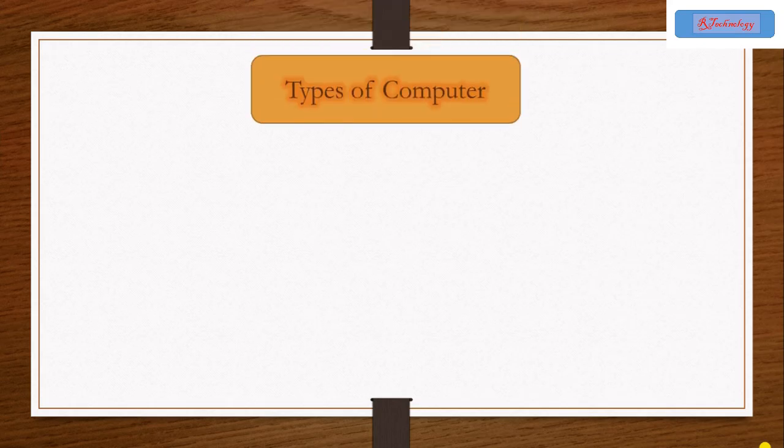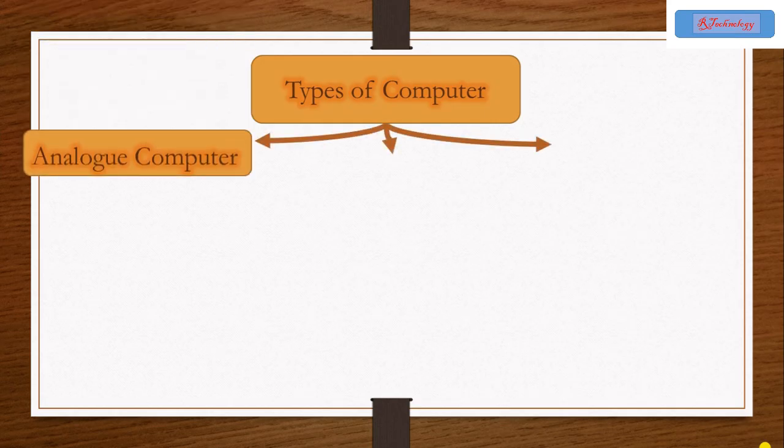As discussed before, in this lesson we are going to learn about the types of computers. So there are three main types of computers: one is analog,